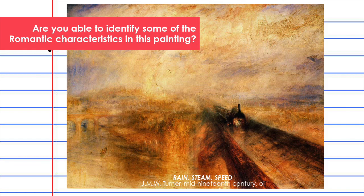Here you see a piece by Turner entitled Rain, Steam and Speed, done in the mid-19th century using oils. Are you able to identify some of the Romantic characteristics in this painting? Remember, we talked about four key words: imagination, excitement, color, and movement. Where do you see these evidenced in this painting?